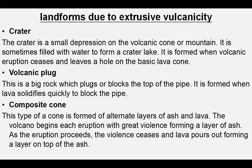The next feature is the composite cone. This is a type of cone which is formed of alternate layers of ash and lava. The volcano begins with an eruption creating a layer of ashes; as the eruption proceeds, lava pours out forming a layer on top of the ash. That is how the composite cone is formed.